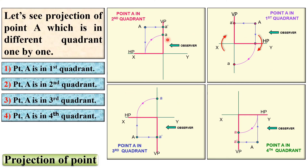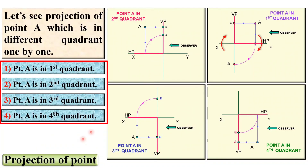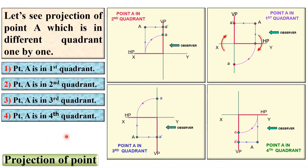This is a very simple introduction for the projection of a point. You have to identify the position of 'a' and a-dash according to the description of point A. I think it is a very simple and easy method to find the position of point A and a-dash, which is called the projection of point A. In the next video we will see the remaining portion. Thanks, my dear friends, for watching this video. Press the like button to appreciate it.